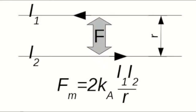The law can be described by the following equation: it states that the force in newtons per meter of parallel wires is equal to two times the magnetic force constant, multiplied by the current in I₁ and I₂, divided by the distance between the two wires.